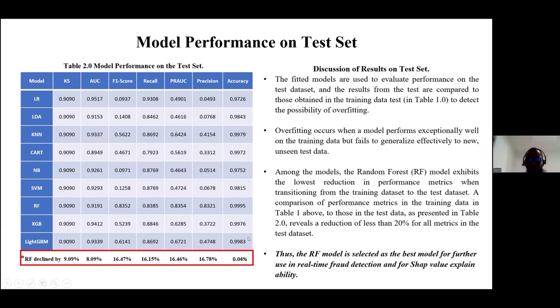With that, I selected the random forest model as the best model to be used further in real-time fraud detection and for SHAP values explainability.